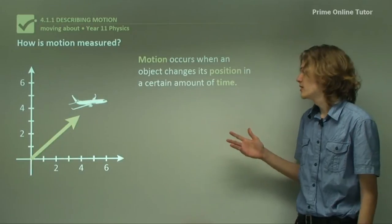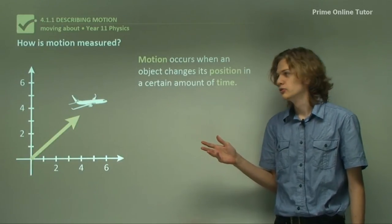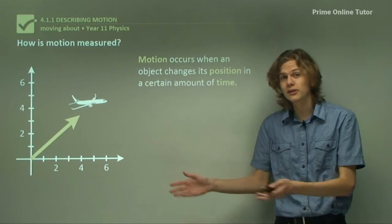Now, motion occurs when an object changes its position in a certain amount of time. So when a bird's flying, or when a person's walking, or when a car is traveling along the road.